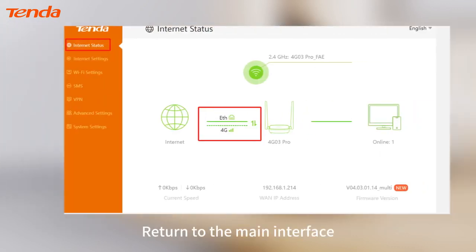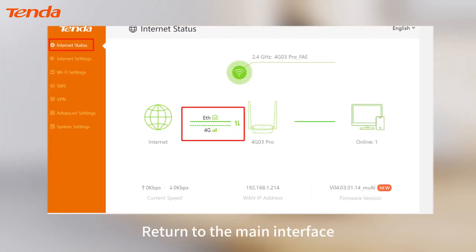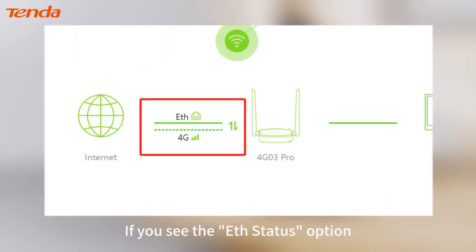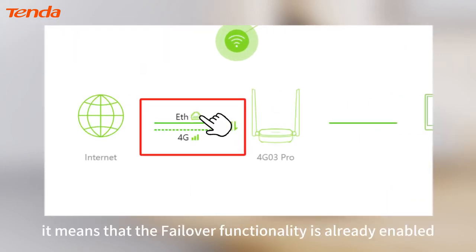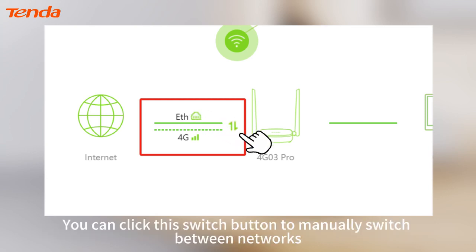Return to the main interface. If you see the add status option, it means that the failover functionality is already enabled. You can click this switch button to manually switch between networks.